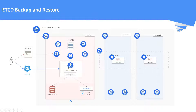etcd is a key-value store database and it is the only component that stores cluster data in a persistent manner. etcd stores the cluster data persistently in a volume directory called /var/lib/etcd. This volume directory is mounted into the etcd pod's filesystem directly. Using a base OS directory as a volume within a pod or container is called a host path volume. Now let us see how to backup and restore the etcd database.